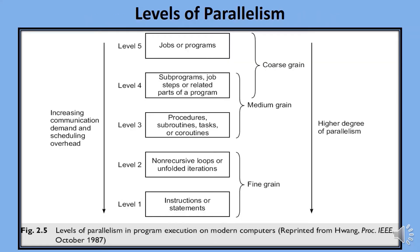The diagram shows the levels of parallelism. Five levels of program execution represent different computational grain sizes and changing communication and control requirements. Level 1 includes instructions or statements. Level 2 includes non-recursive loops or unfolded iterations. Level 3 includes procedures, subroutines, tasks, or coroutines.